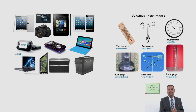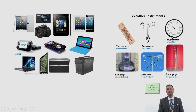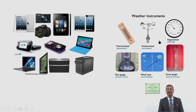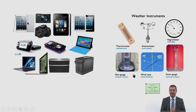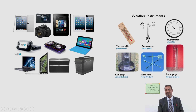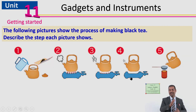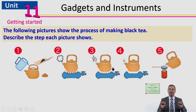I want to show you some other pictures — these are examples of instruments. These instruments are used to measure weather. For example, you can say thermometer, anemometer, hygrometer. So what difference do you find? These are the gadgets and these are the instruments. Our theme, as you have already said, is gadgets and instruments.